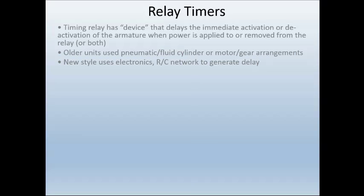Timing relays are a device that delays the immediate activation or deactivation of an armature when power is applied to it or removed from the relay. If we go back to relay logic, we know that we have a relay with a coil. When we energize the coil, it has all these little contacts that will either go closed or go open — to the opposite position than what they are. With timing relays, instead of that action of those contacts happening right away, it actually either delays coming on or coming off.